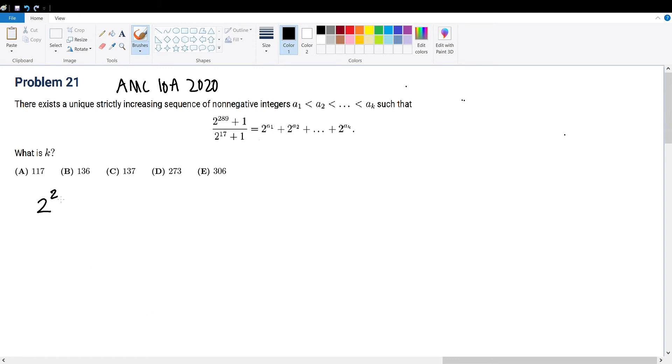So 2 to the 289th plus 1 over 2 to the 17th plus 1. We're trying to factor out into some format like this to help us find out the values of ak and k subsequently. Simplifying this fraction isn't really easy because we have 17th and 289. That's a very big number. So let's simplify it. We see that 289 is equal to 17 squared.